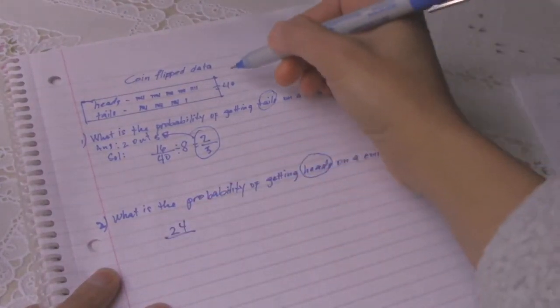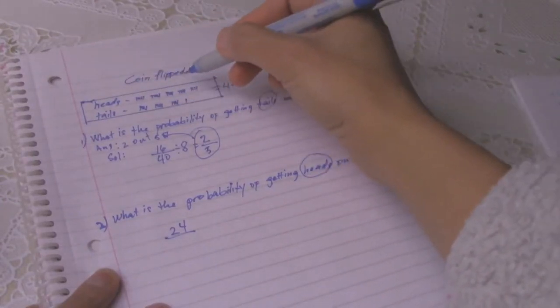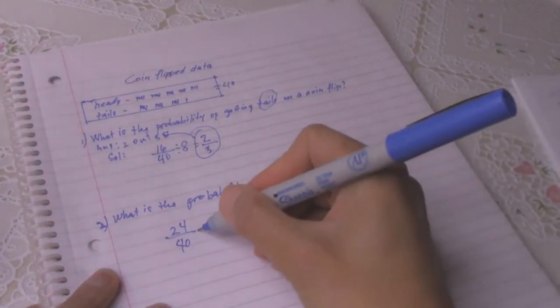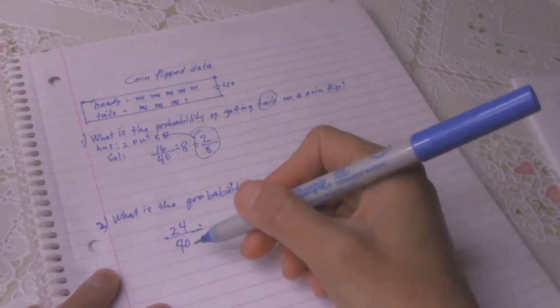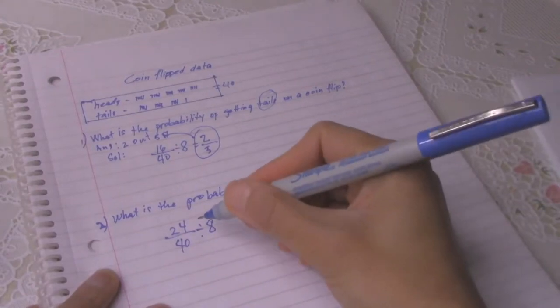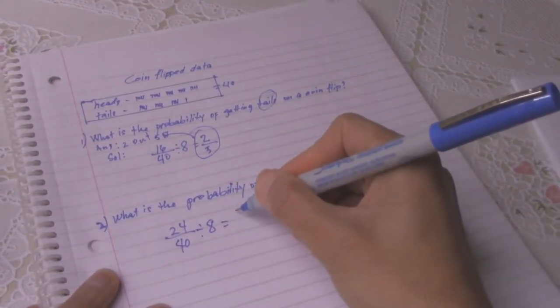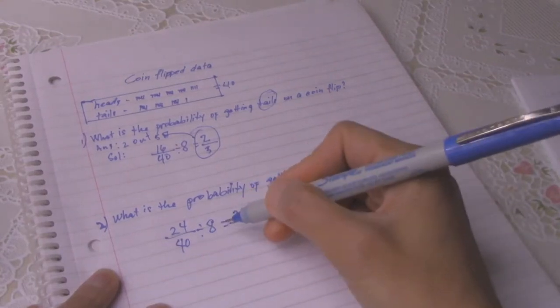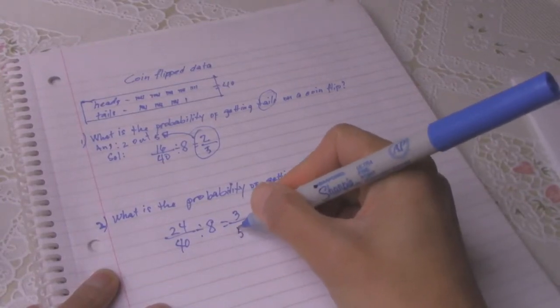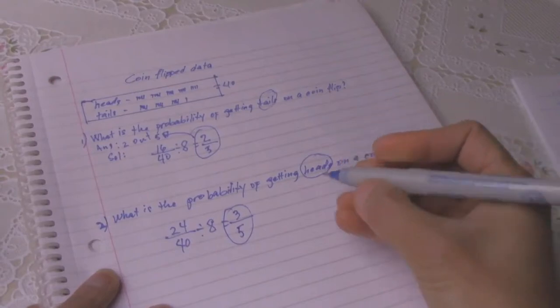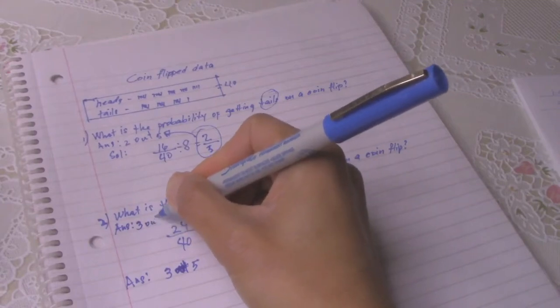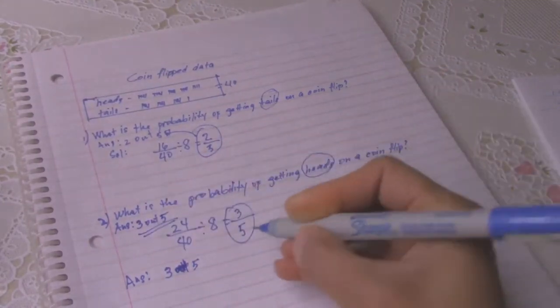And the total of heads and tails is 40. It's again 40. Again, you will find a number that can divide 24 and 40. So you can use 8 again. So 24 divided by 8 equals 3, and 40 divided by 8 equals 5. So the answer is 3 out of 5.